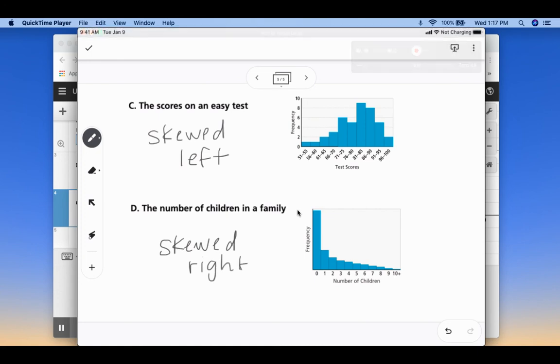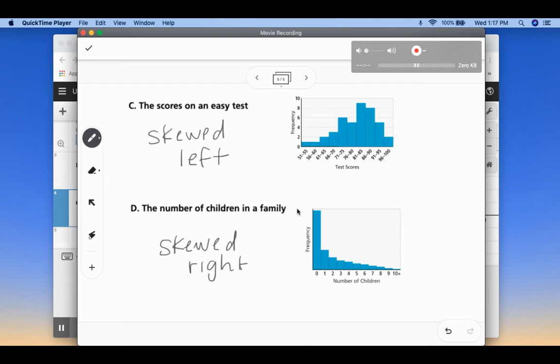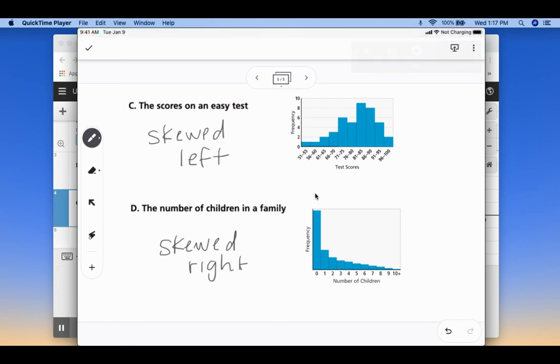And so that kind of gives a couple examples and how to use Desmos to find these different distributions and see what your data set looks like. So let me know if you have any questions. Thank you.